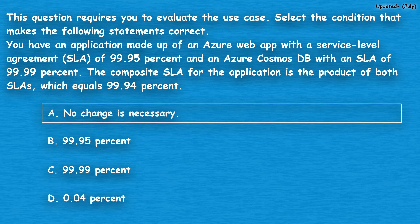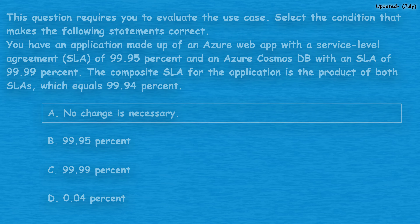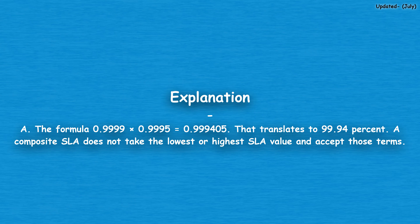The correct answer is option A, no change is necessary. The formula 0.9999 × 0.9995 = 0.999405, which translates to 99.94%. A composite SLA does not take the lowest or highest SLA value and accept those terms.